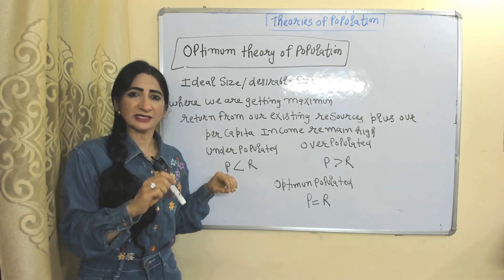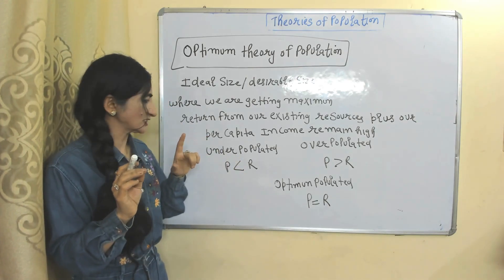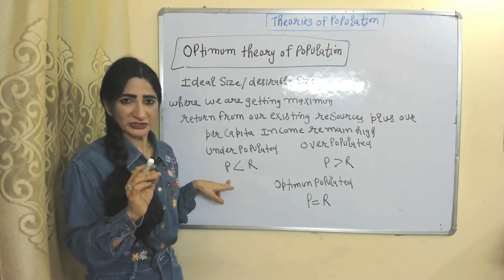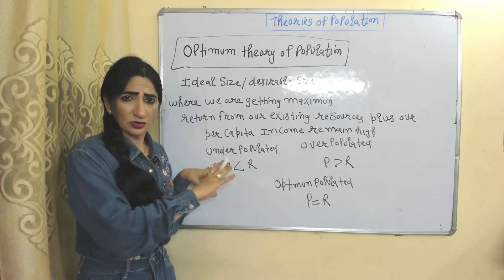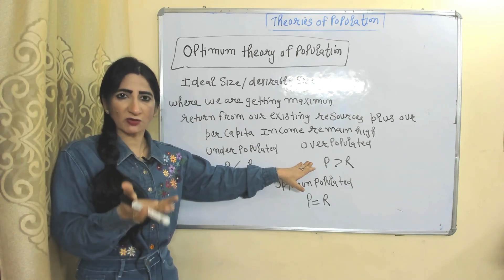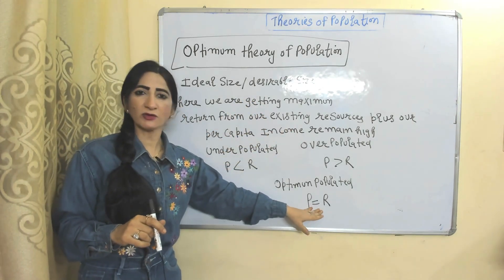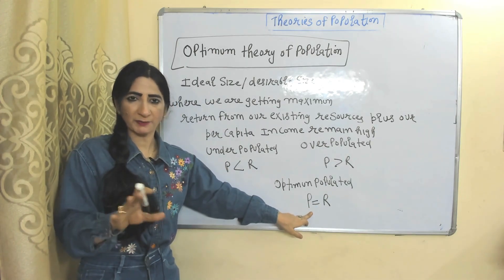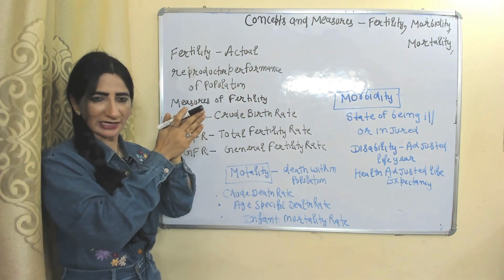The optimum theory of population describes the desirable size of population where we are maximally utilizing our existing resources and our per capita income is high. This theory talks about three stages: underpopulated — where resources are more than population, meaning we are not properly utilizing resources, so per capita income is low; overpopulated — where population is more than resources, resources are overutilized, so per capita income is also low; and optimum population — where resources are equal to population, meaning we are maximally utilizing existing resources and per capita income remains high.